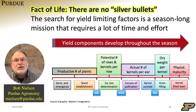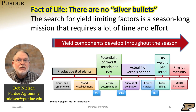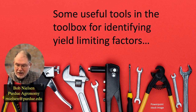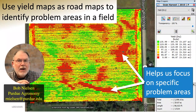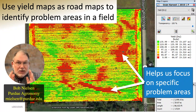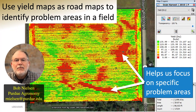We talked about these yield components in the previous segment and how they're determined throughout the entire growing season, and why we need to minimize stress during the entire growing season in order to optimize these different yield components. One of the tools in the toolbox is as simple as the yield maps that you've been accumulating for years. These yield maps can be really useful roadmaps to simply tell us where the problem areas are in the field.